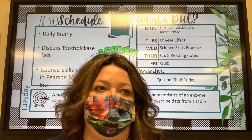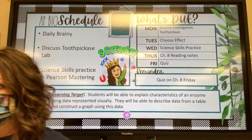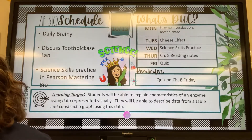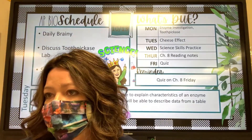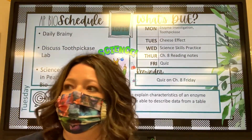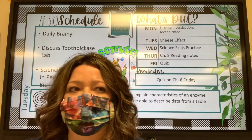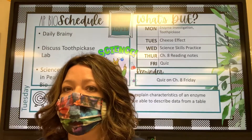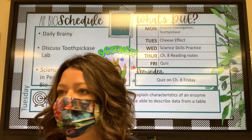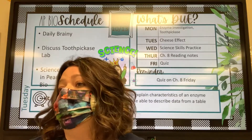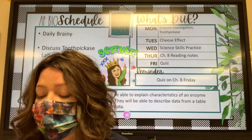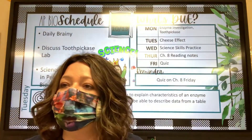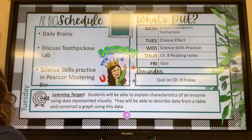What happened with the rate is we had a buildup of the product, meaning we had a buildup of the broken toothpicks and less of the unbroken toothpicks. What happened to our rate? It decreased a little bit. Why? Because the unreacted substrate was less and less easy to find — it was harder to find those unbroken toothpicks, and so it took longer to do that.